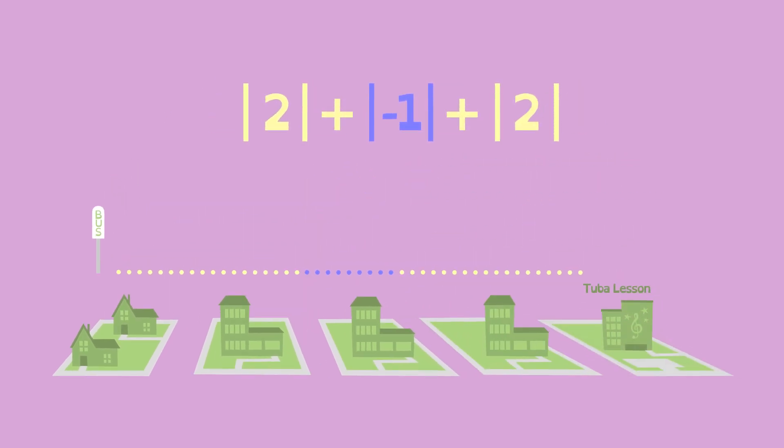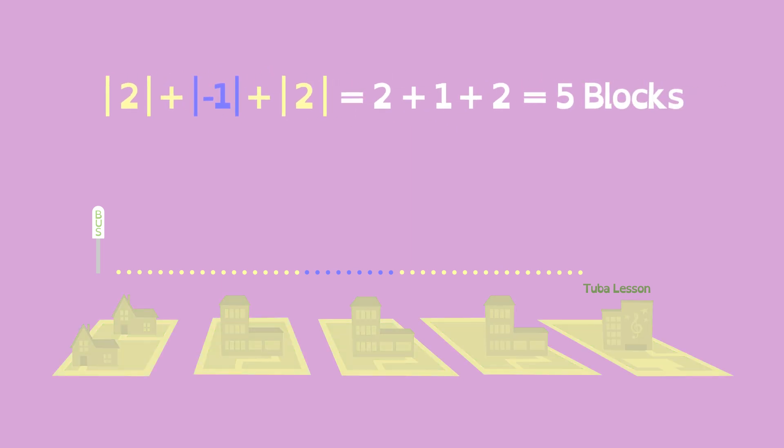Absolute value shows us how much she actually walked. Two blocks forward, plus one block back, plus two blocks forward, for a total of five blocks. Phew!